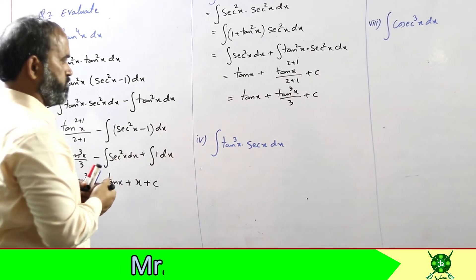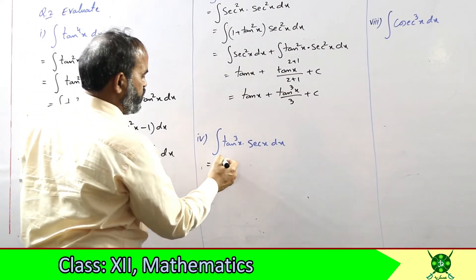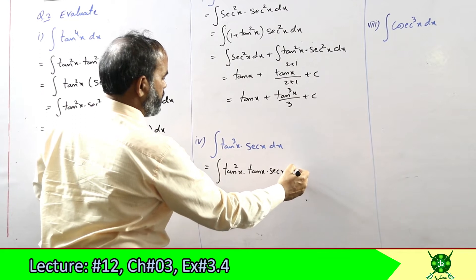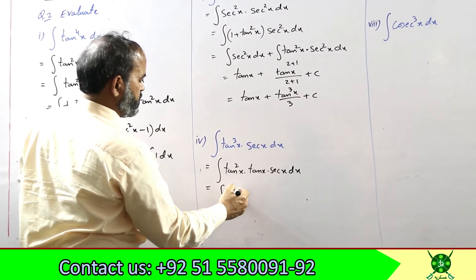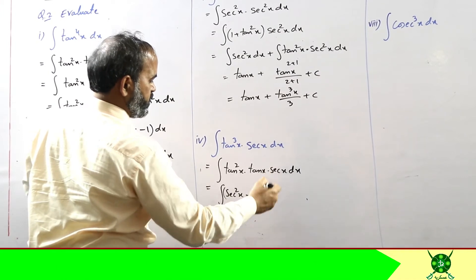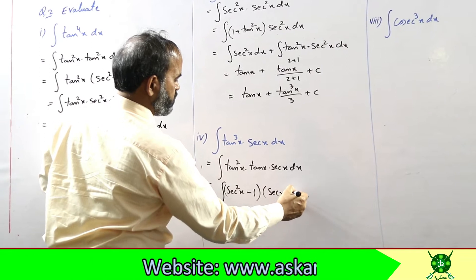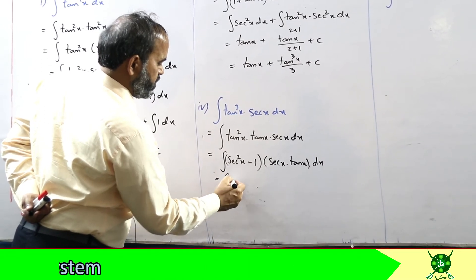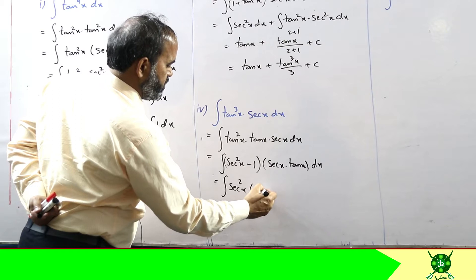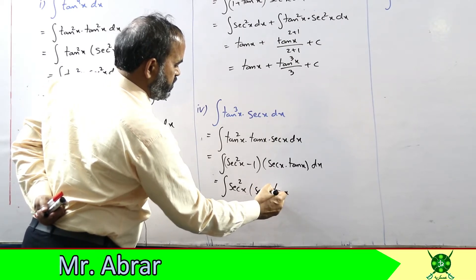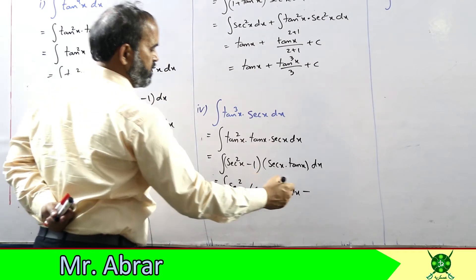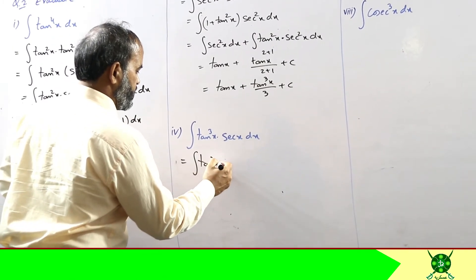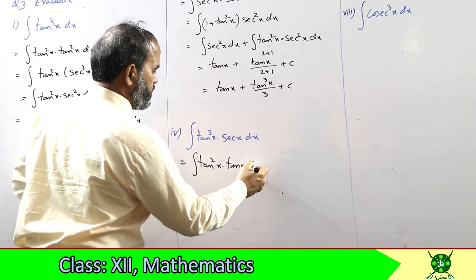अब tan³(x)/3 plus - यहां tan की 3 power है, तो इसको break कर रहा हूँ: tan²(x) into tan(x) into sec(x)। tan²(x) को change करता हूँ sec²(x) minus 1 में, और तरतीब change करके sec(x) into tan(x) पहले लेख रहा हूँ। जब sec(x)·tan(x) को sec के साथ multiply करूँगा तो sec³(x) नहीं बनाओँगा बल्कि sec²(x) into sec(x)·tan(x) लिखूँगा।